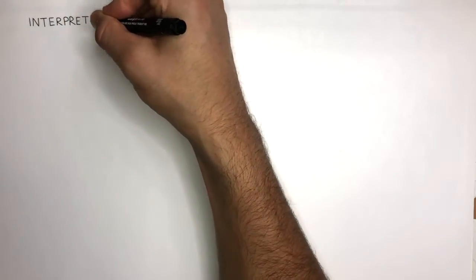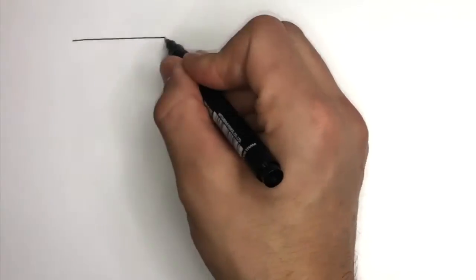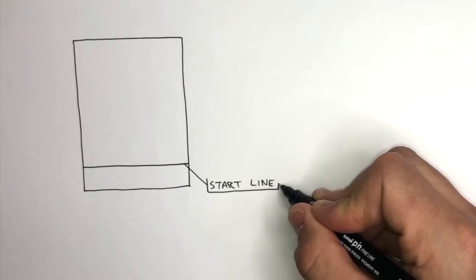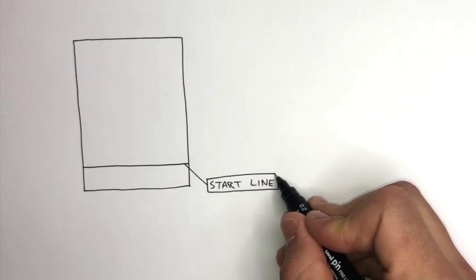In this video we're going to learn how to interpret chromatograms. On any chromatogram, the start line is where we place the samples, widely spaced apart.